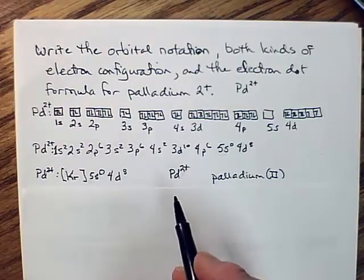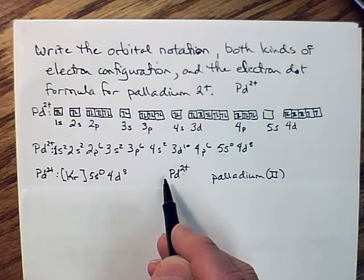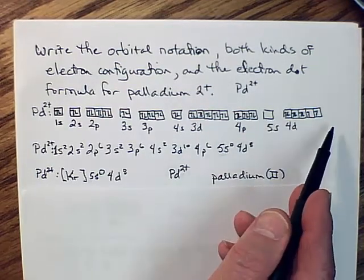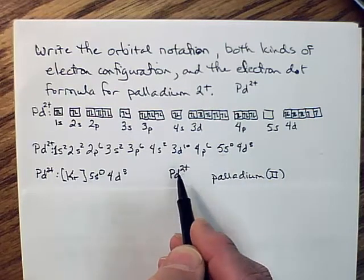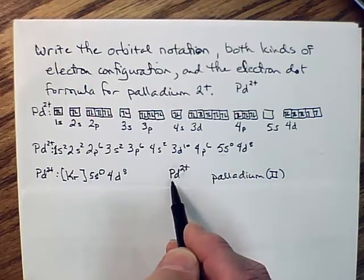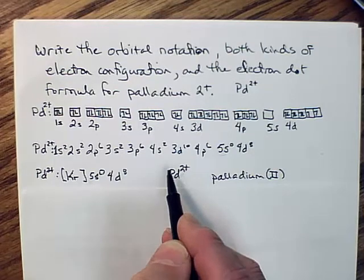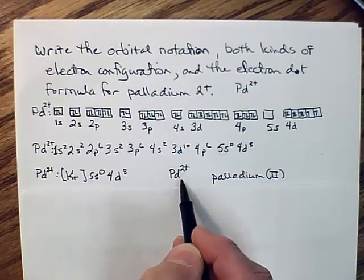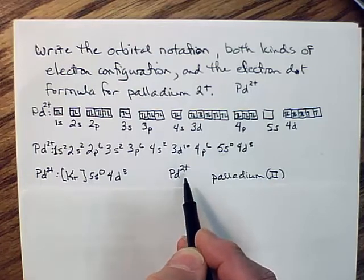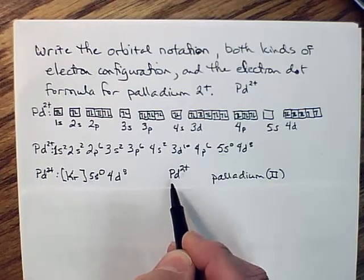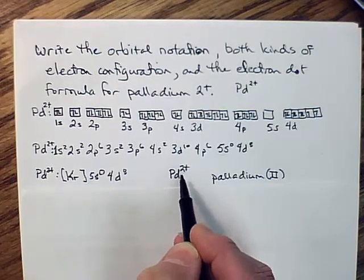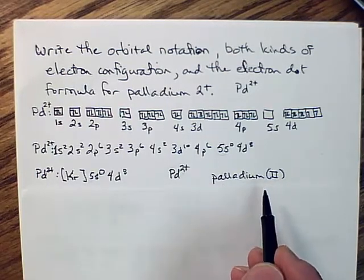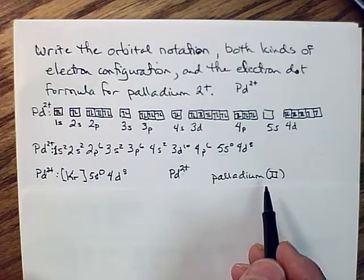Then, when we do the electron dot formulas, palladium, the atom, would have had two electrons in 5s, no electrons in 5d. So, it would have had two dots. When you remove those two dots, well, with electron dot notation, the dots represent electrons. You remove those two dots to get that 2 plus charge. So, this, then, is the symbol, the electron dot notation for palladium, the ion, palladium 2. It's called palladium Roman numeral 2. That's the name we're going to use for it. We'll learn more about that in the next unit.